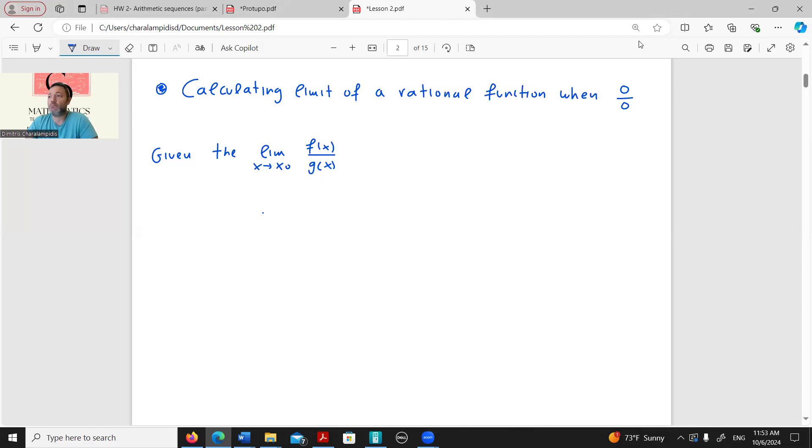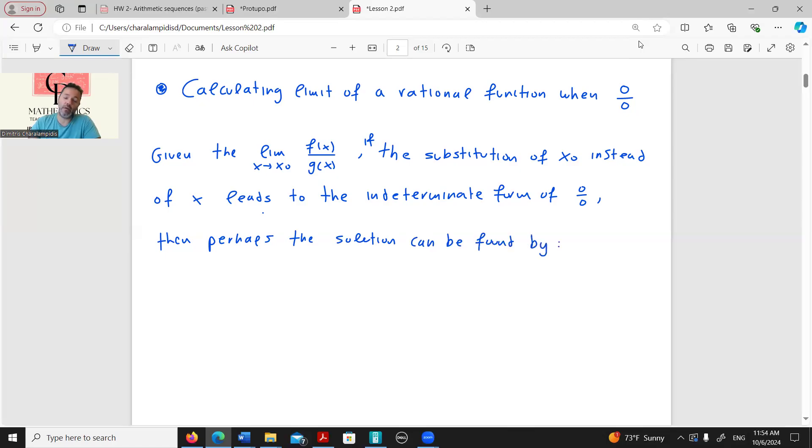If we get something which is regular, any non-anomaly, we are fine. But if the substitution of x0 instead of x leads to the indeterminate form of 0 over 0, then perhaps, and perhaps is critical here because what we will discuss is not something that can be applied in any case, but this is a way to approach things. Then perhaps the solution can be found by following the steps below.